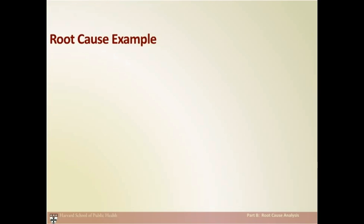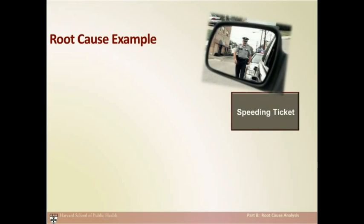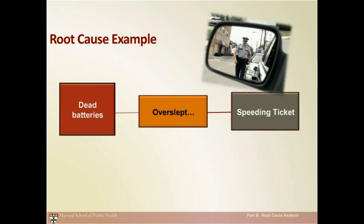Let's apply root cause analysis to a simple example of getting a speeding ticket while driving to work. You overslept, got up late, and were running late. Why? The alarm clock didn't work. We can think of the oversleeping and running late as an immediate cause, but the dead batteries in the alarm clock were the root cause. The solution? Get an alarm clock that plugs into a power outlet.